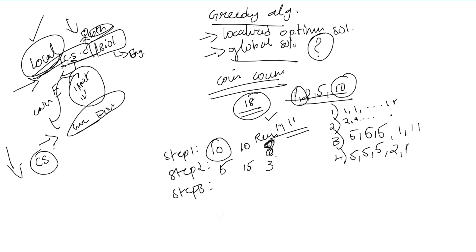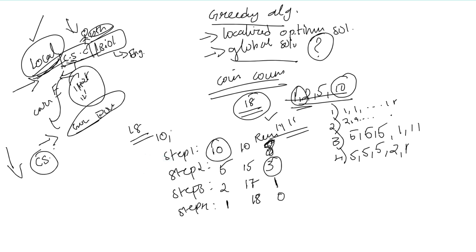Step 3: the value of the nearest coin is 2. So we return 2, and the remaining balance is 1, making the total returned so far 17. Now the remaining balance is 1. In Step 4, the nearest coin is 1. We return 1, and the total is 18. The result is 18 rupees returned.